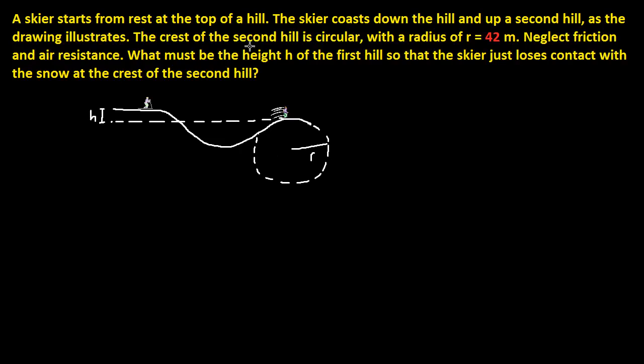The crest of the second hill is circular with radius of r equals 42 meters. Neglect friction and air resistance. So what must be the height h of the first hill so that the skier just loses contact with the snow at the crest of the second hill?